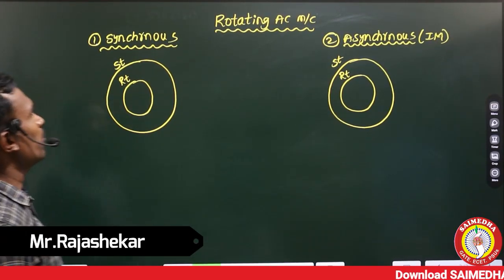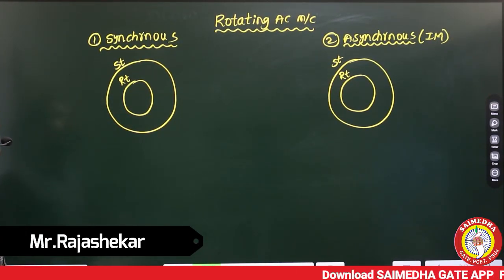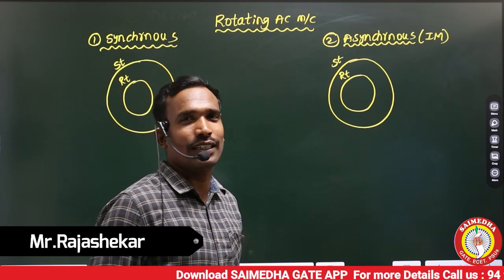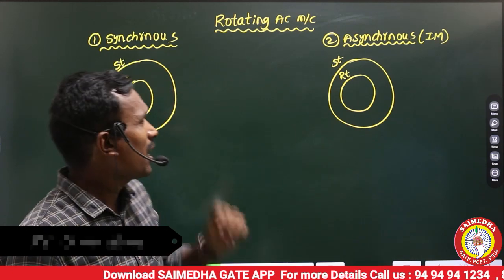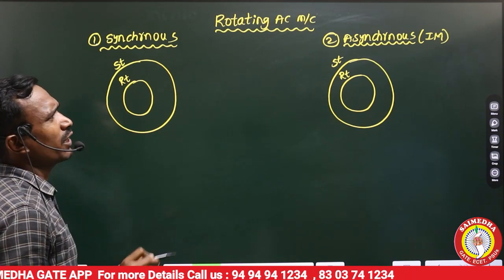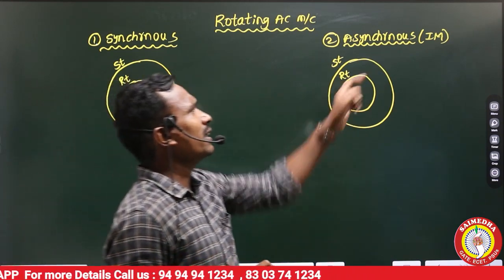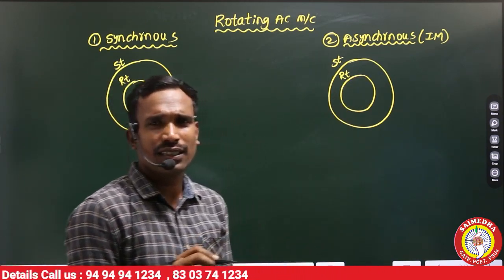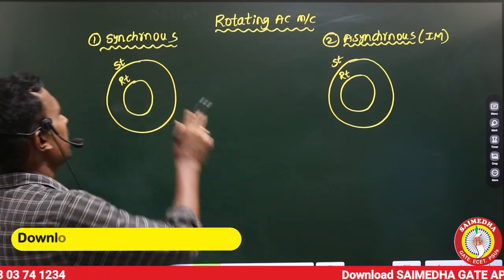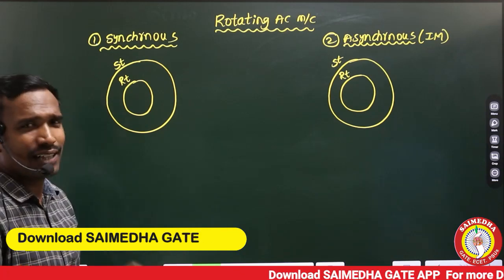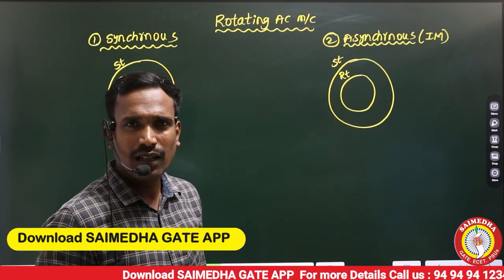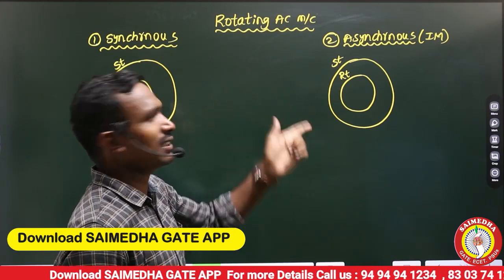Hi guys, in this video we are going to discuss about the differences between synchronous and asynchronous machines. Generally, the rotating AC machines are two types: one is called synchronous machine and the other one is called asynchronous, alias induction machines. For example, these two machines as motors: synchronous motor and asynchronous motor. I am trying to explain the differences between these two.